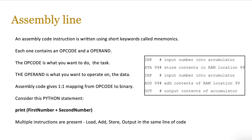An assembly code instruction is written using short keywords called mnemonics — things like INP, STA, ADD, and OUT. Each instruction contains two parts: an opcode and an operand. The opcode is what you want the instruction to do — the task itself — and the operand is what you want to operate on, the data. Assembly code normally gives one-to-one mapping from opcode to binary. Consider a Python statement like 'print first_number + second_number' — there are multiple instructions present: load, add, store, output, all in one line. That doesn't happen in assembly code; everything is done one step at a time, which is closer to how the CPU executes instructions.